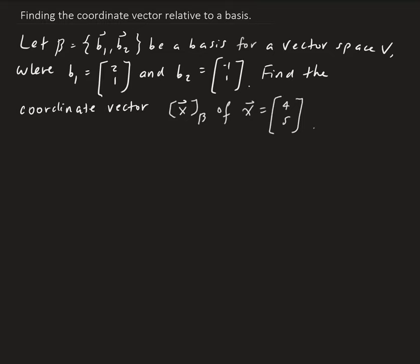In this example, we are given a basis where b1 and b2 are given. We want to find the coordinate vector x relative to the basis, given that the vector x is [4, 5]. So we can think of this as looking at the standard basis, where we have x1 and x2, and the point [4, 5] is living in here somewhere.